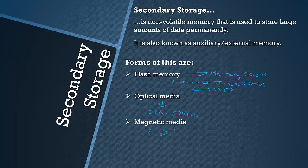For magnetic media, we're looking at stuff like hard discs inside hard drives and also cassettes, which are before my time and certainly before your time, but they are a form of magnetic media. They were very common from the 1980s onwards and died out when CDs became massive. Now CDs are dying out, more to do with the cloud, but that's not to do with secondary storage.